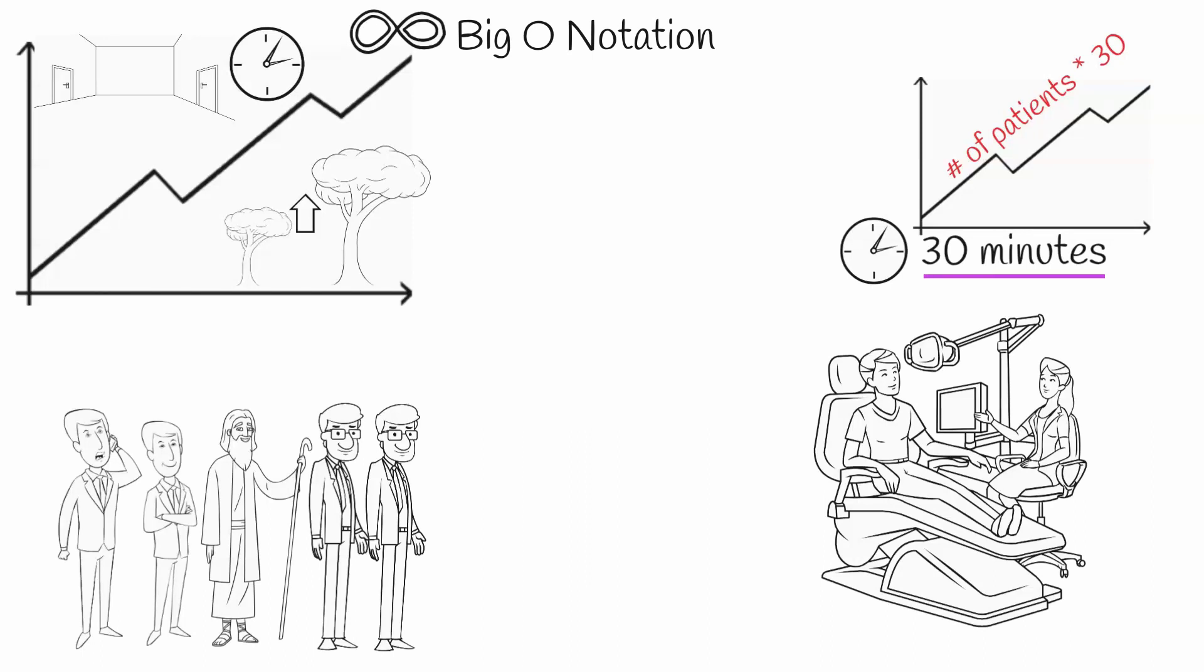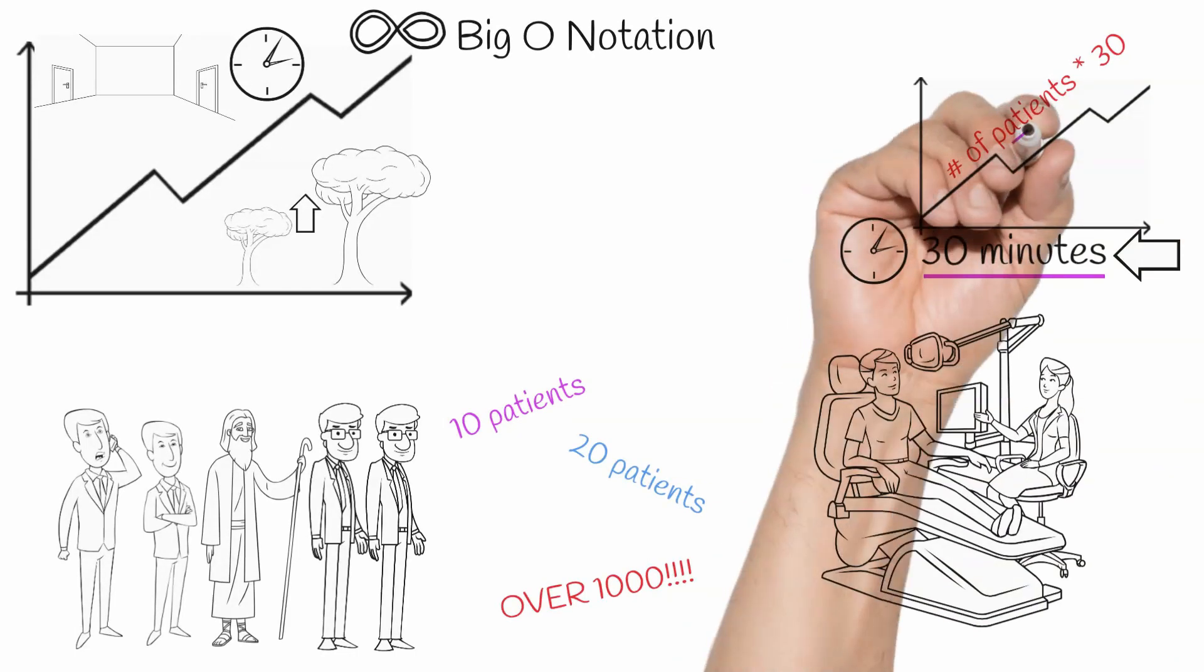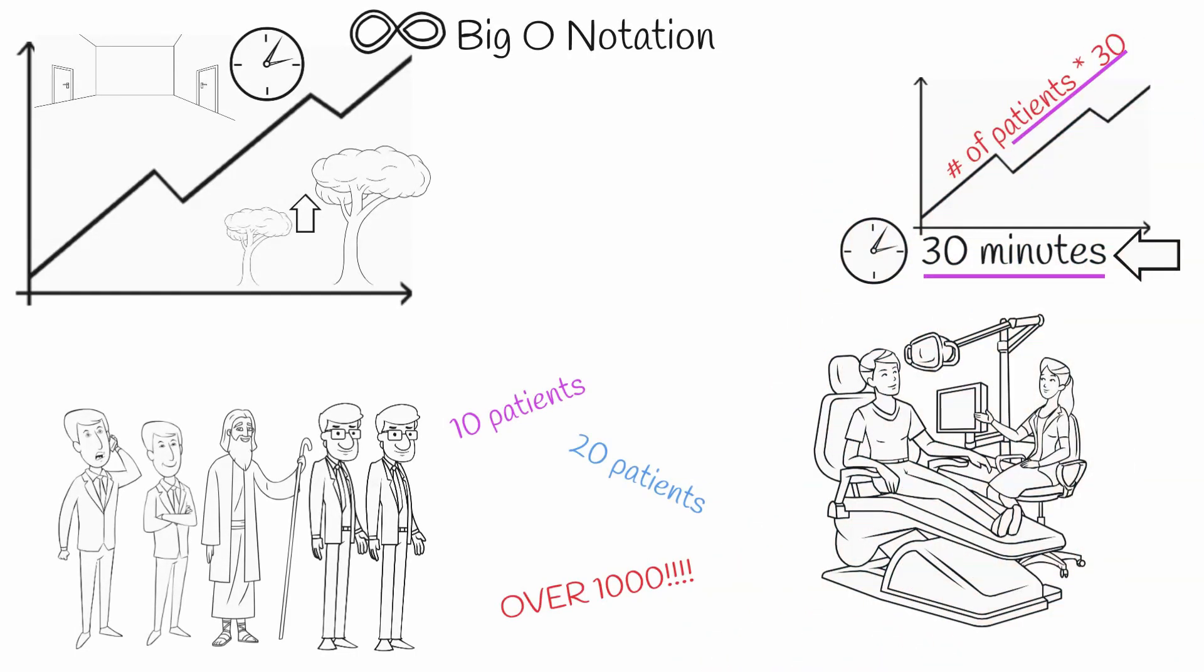This gives us a general understanding of how long our dentist would take to treat 10 patients, 20 patients, or even 100,000 patients. This is because, since we know that the dentist takes a constant amount of time, which is 30 minutes, to treat each patient, we can always calculate the time it would take for her to treat any number of patients by multiplying the number of patients times 30 minutes.